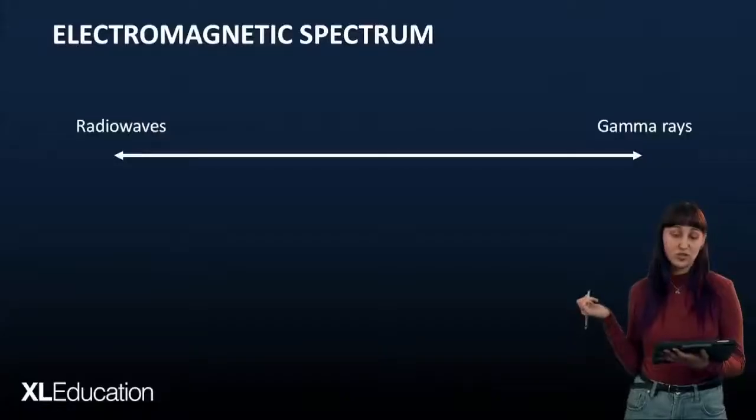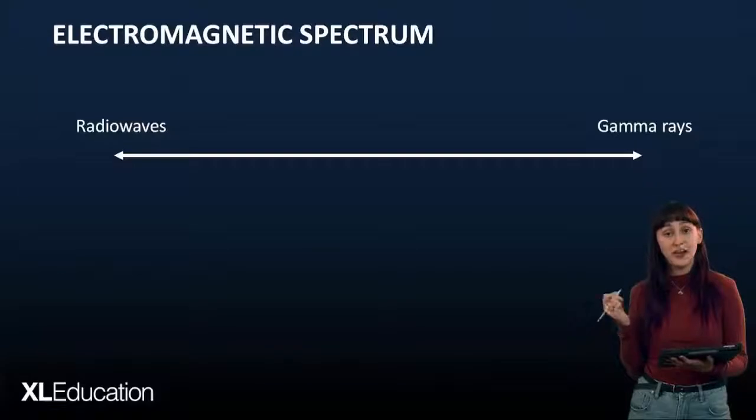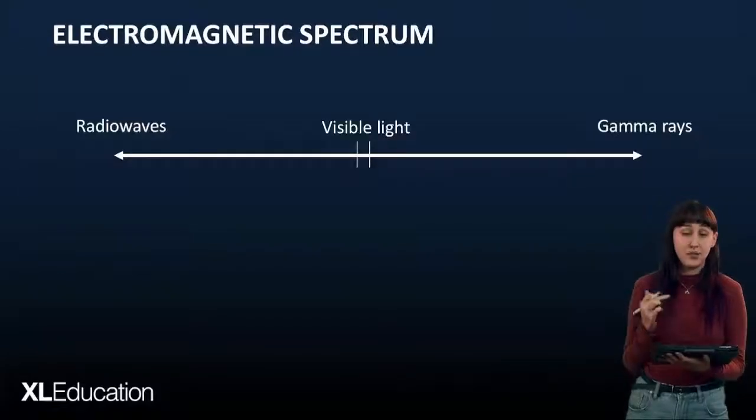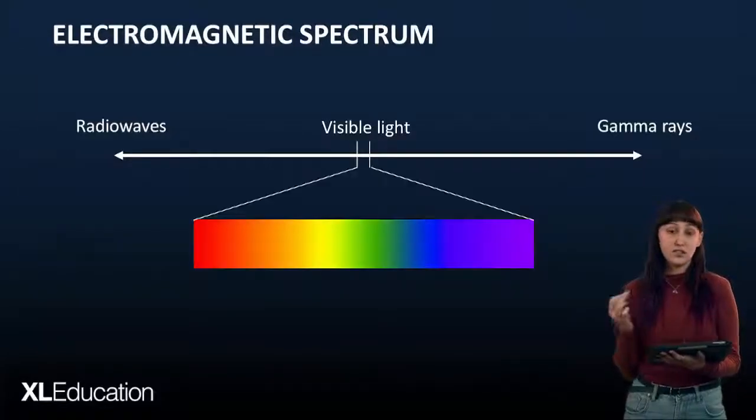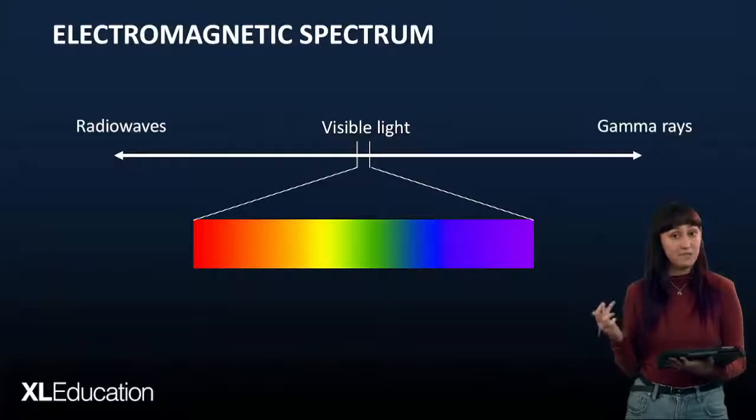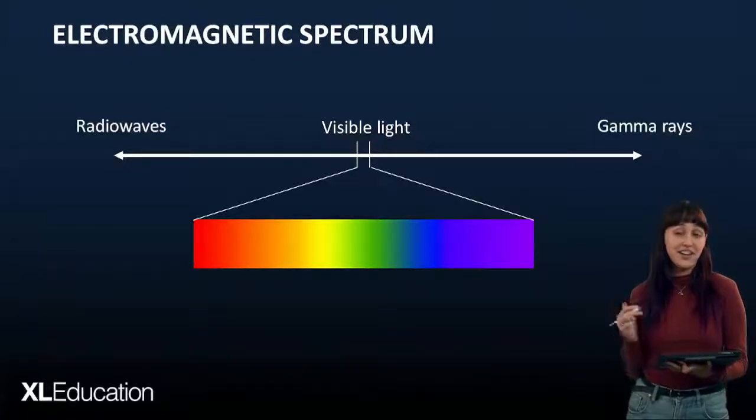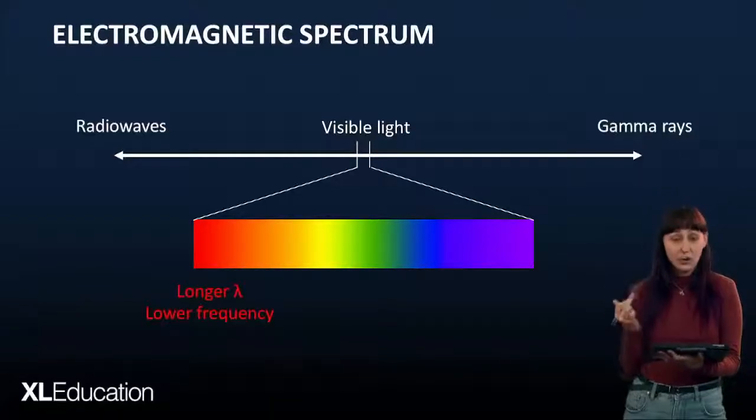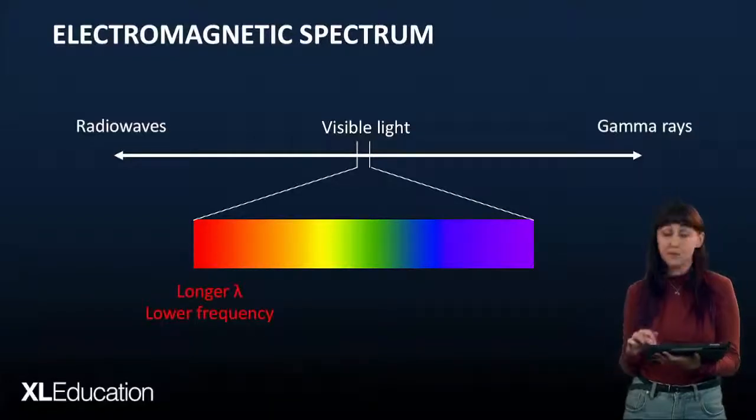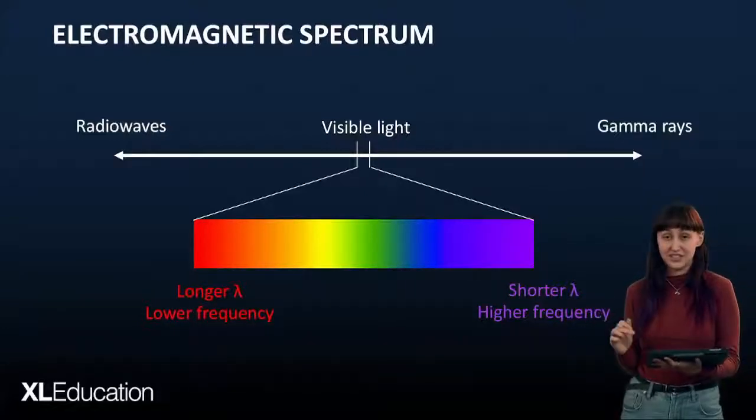We're going to start off by recapping the electromagnetic spectrum, which ranges all the way from radio waves to gamma rays, with visible light falling somewhere in the middle, consisting of all lights in the visible spectrum. It is important to remember that electromagnetic waves that fall on the red side of the spectrum have a longer wavelength and a lower frequency, and those falling on the violet end of the spectrum have a shorter wavelength and a higher frequency.